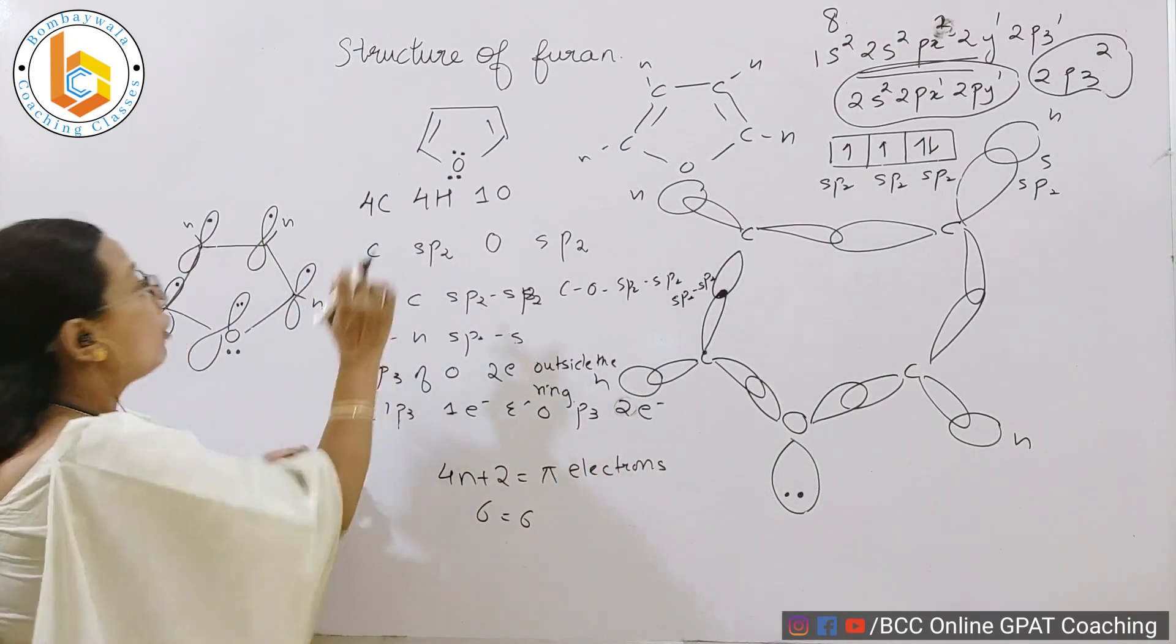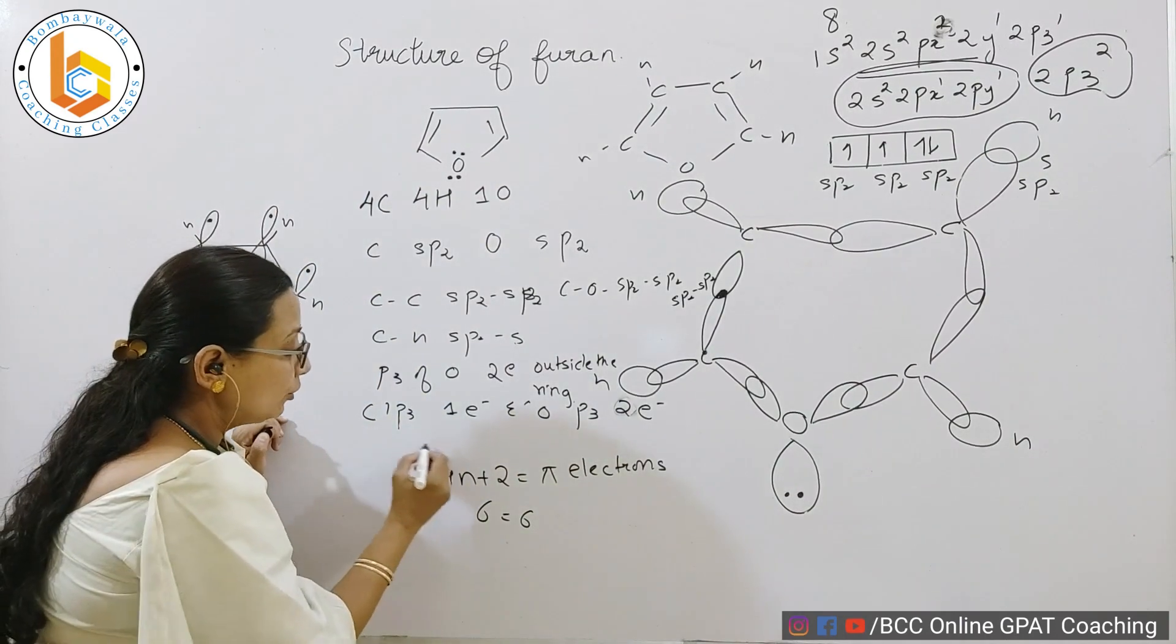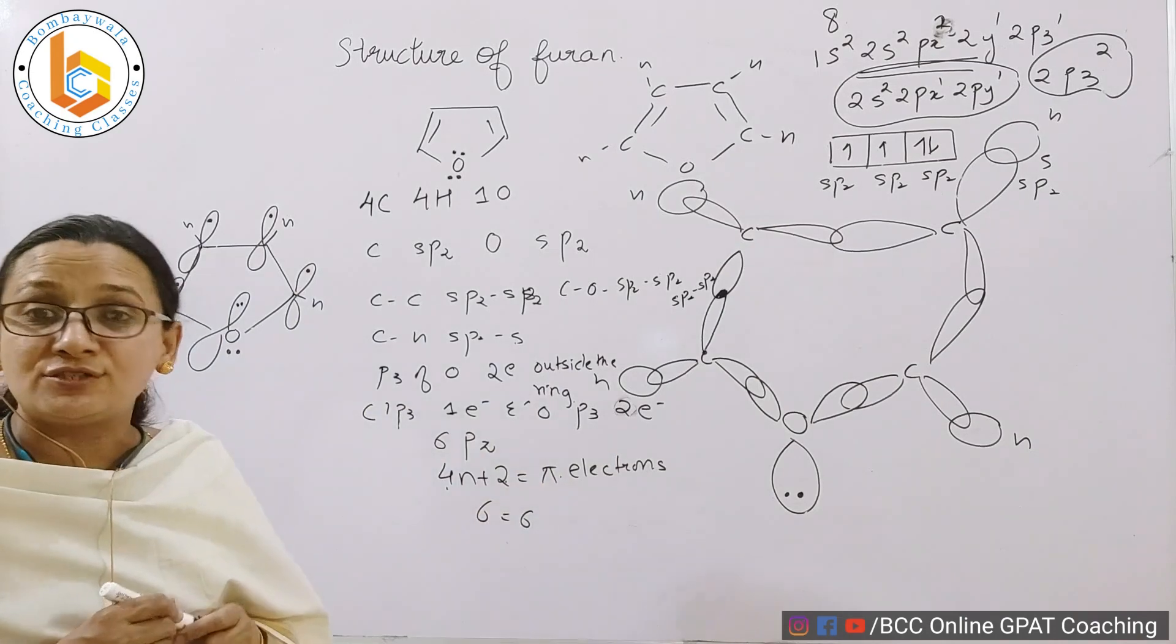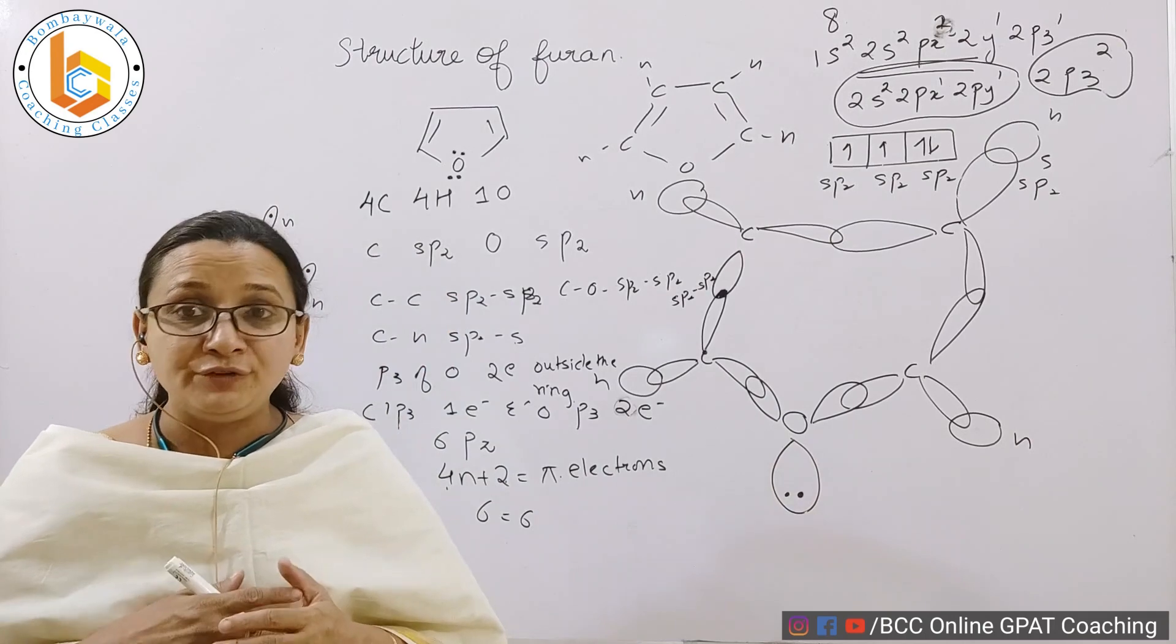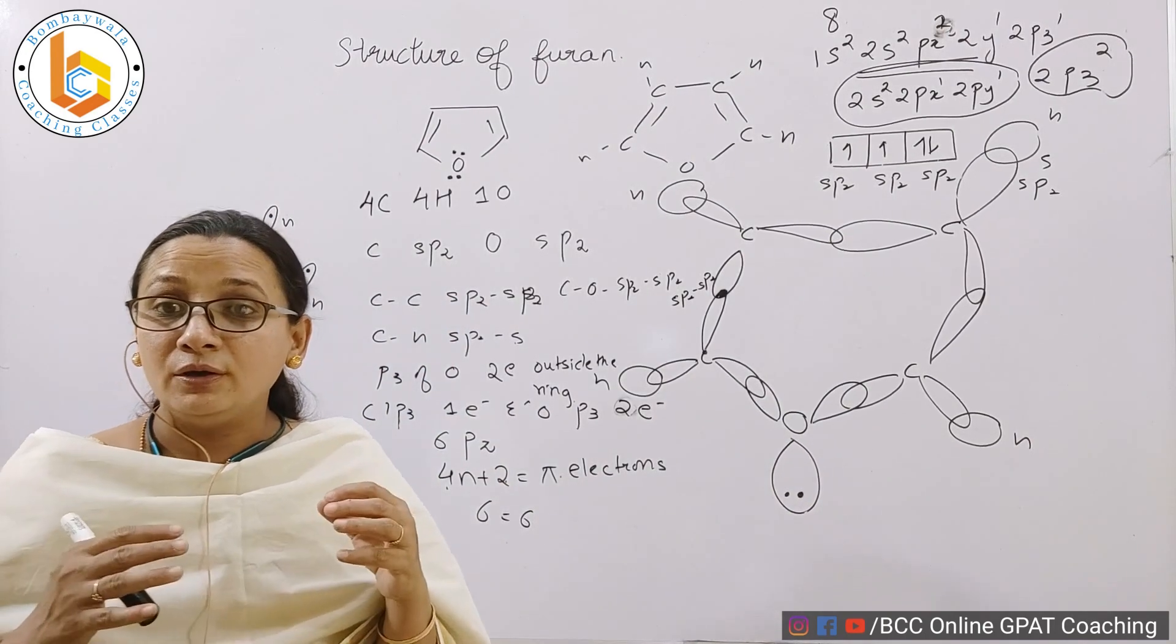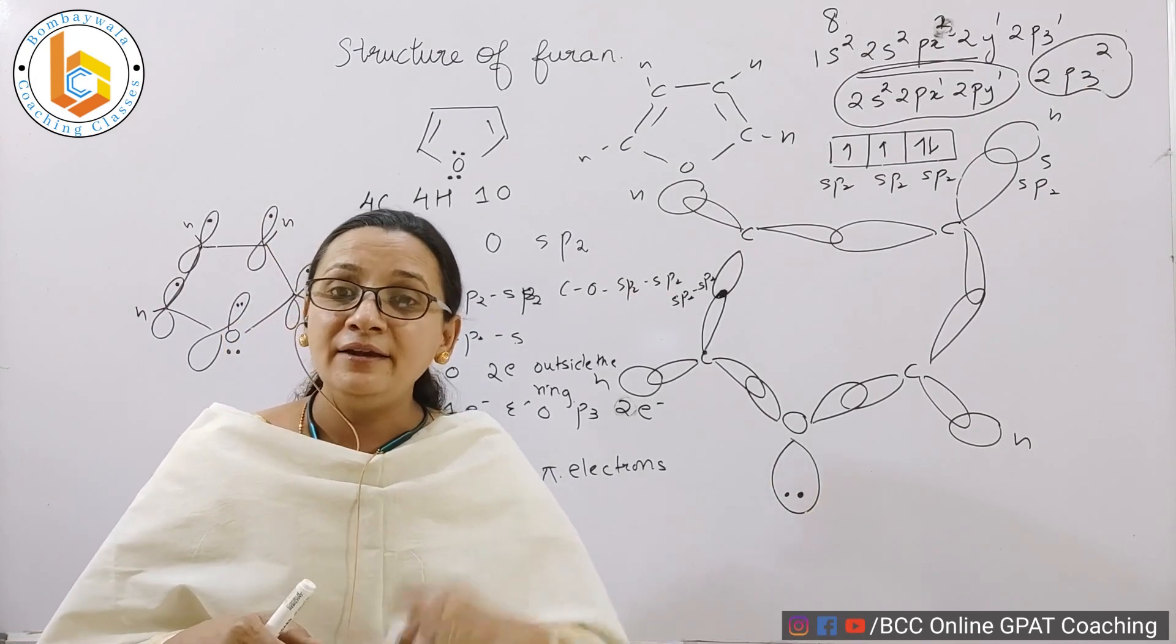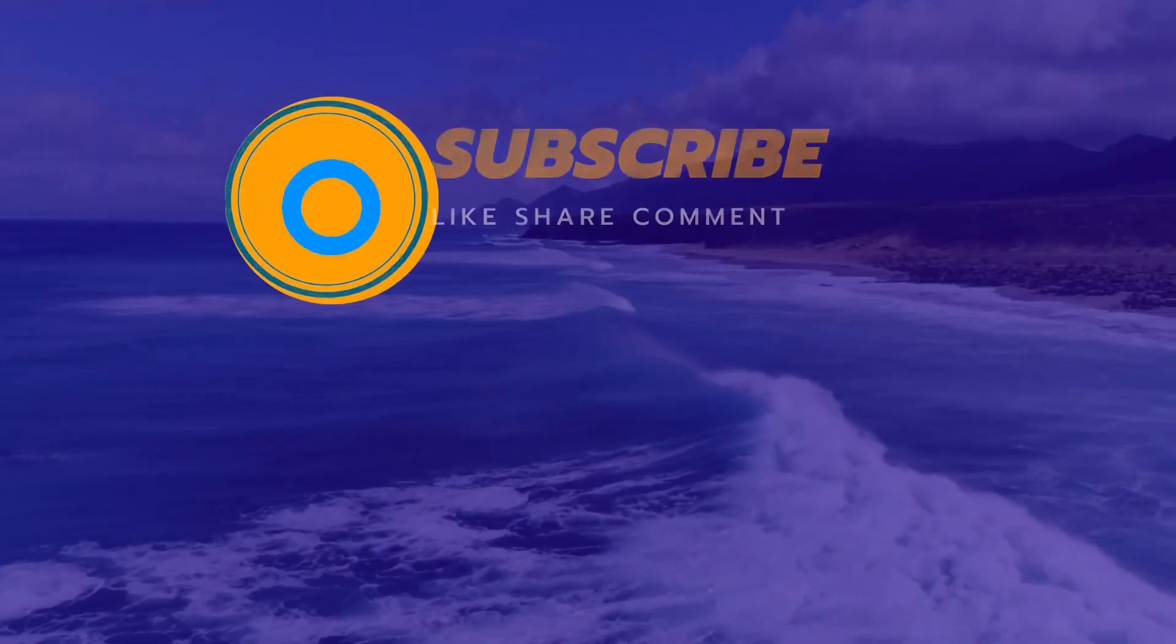Together, one from each carbon and two from oxygen makes the total number of pi electrons 6. That means 4n+2 equals the number of pi electrons, and that makes the structure of furan aromatic. Similarly, in our next video we will be talking about the structure of thiophene. The only difference is that there was nitrogen in pyrrole, oxygen in furan, and sulfur in thiophene. Keep watching. Don't forget to subscribe to this channel. Thank you.